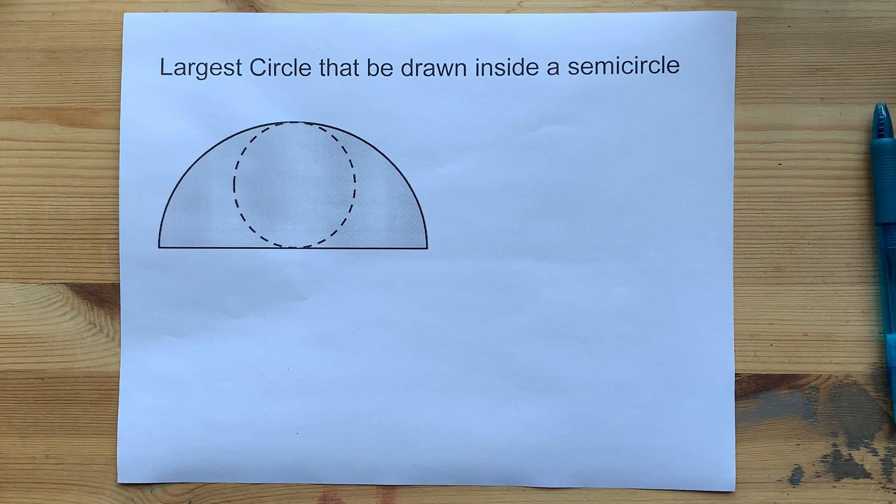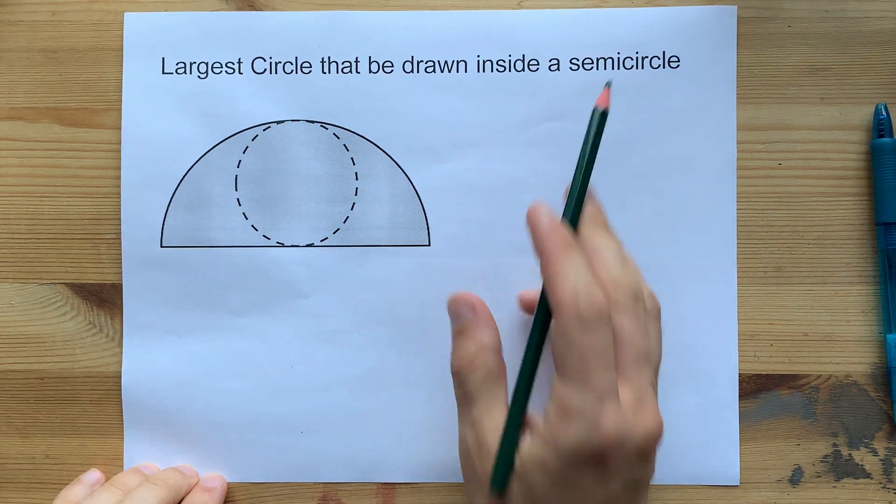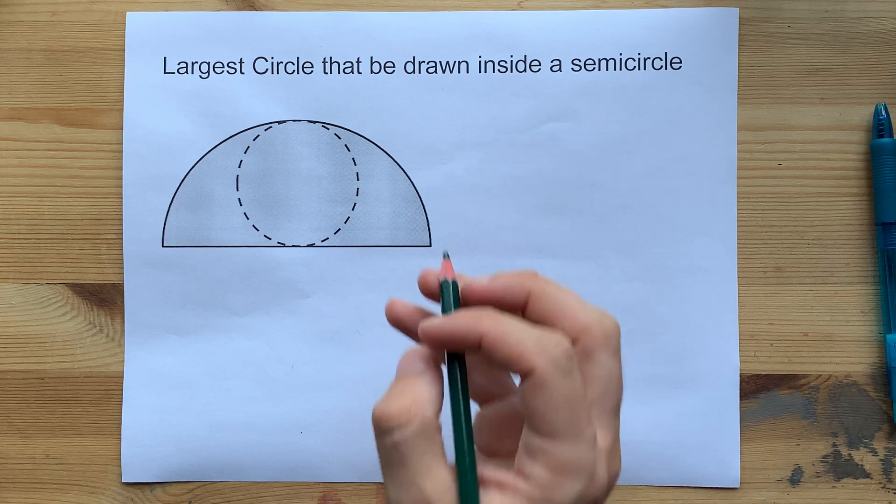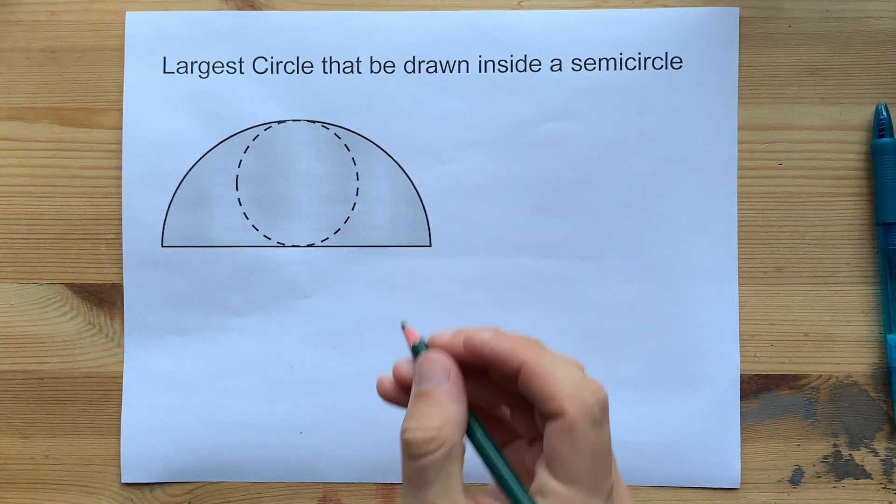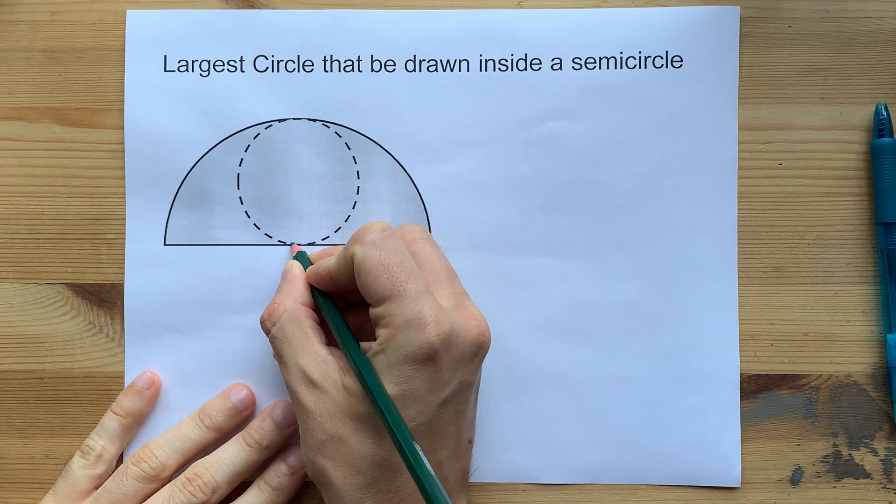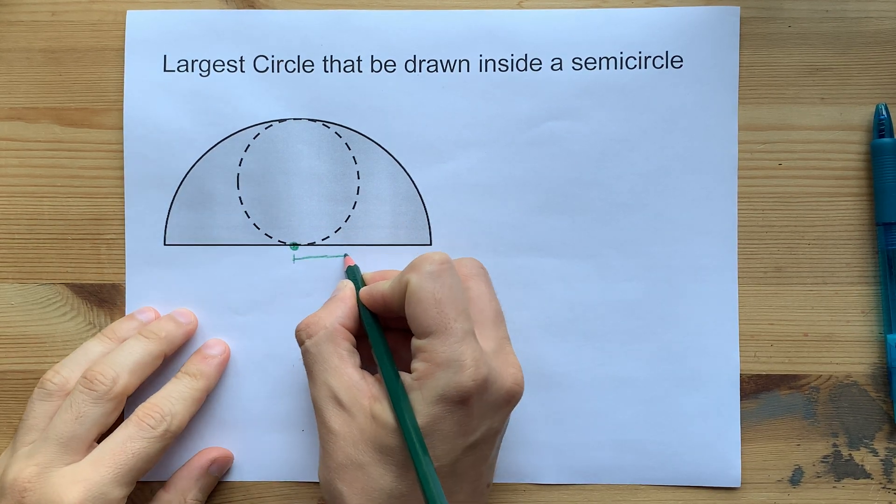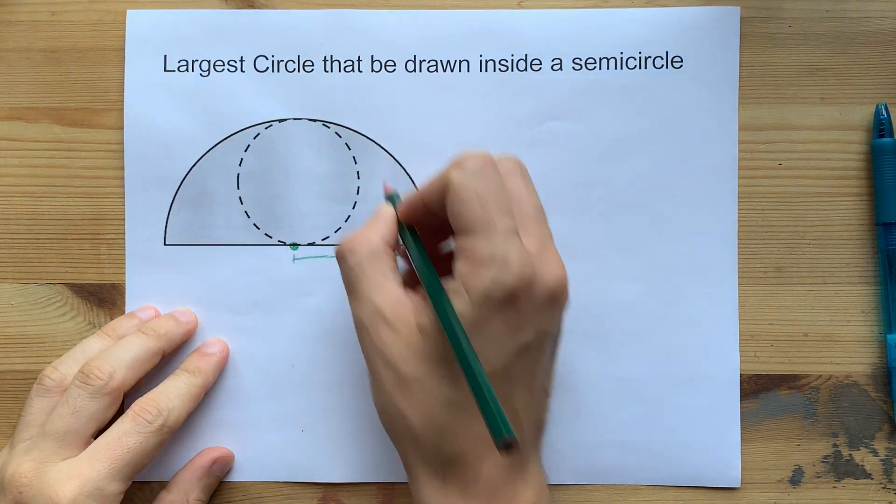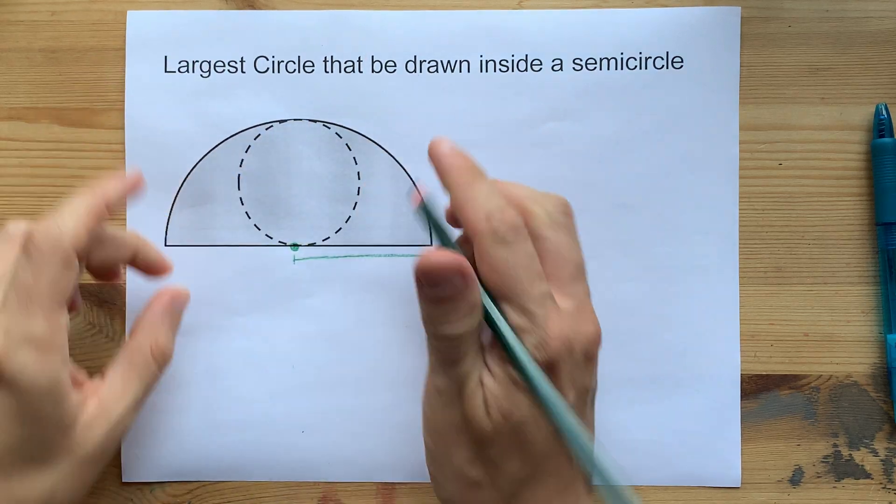The largest circle that could be inscribed within a semicircle is easy to see once I help you visualize it. If you take the center of that semicircle, let's call the radius of the semicircle, the larger half circle, R.